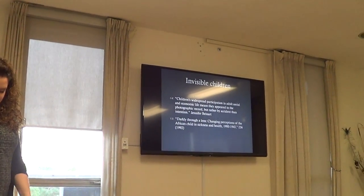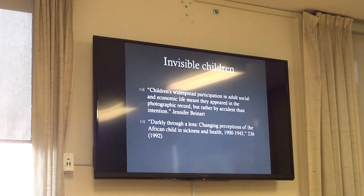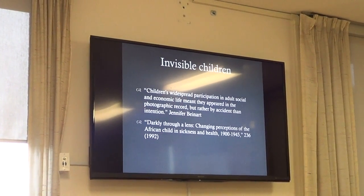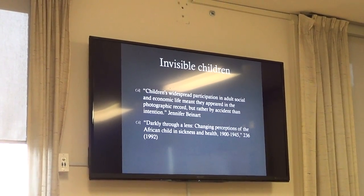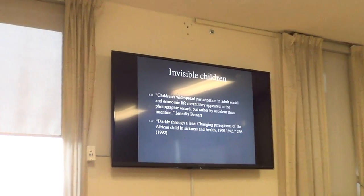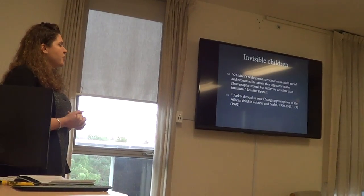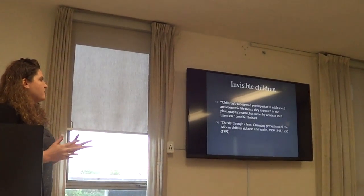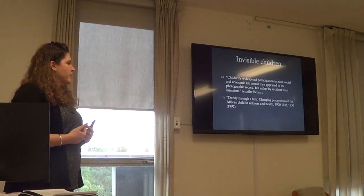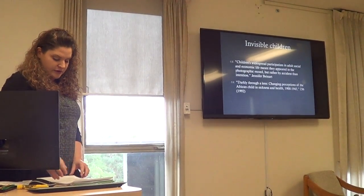The first thing that I see is actually invisibility, particularly when it comes to children. Historian Jennifer Beinart has looked at colonial photographs with a focus on images of African children and sickness and health, and finds many of the same things I do. She writes that children's widespread participation in adult social and economic life meant that they appeared in the photographic record, but rather by accident than intention. I'm always trying to think not just about what is depicted, but what's absent.